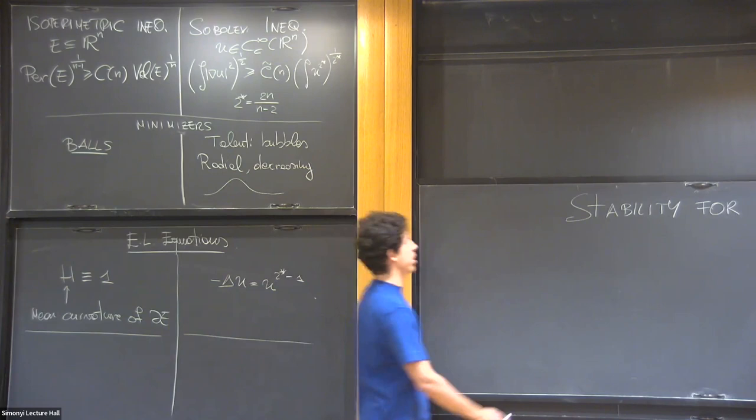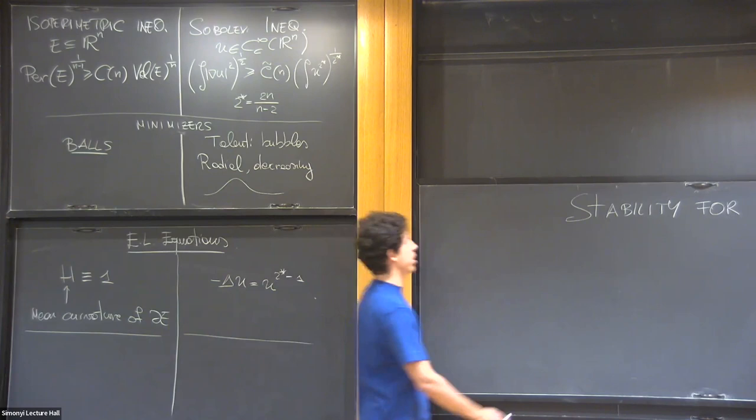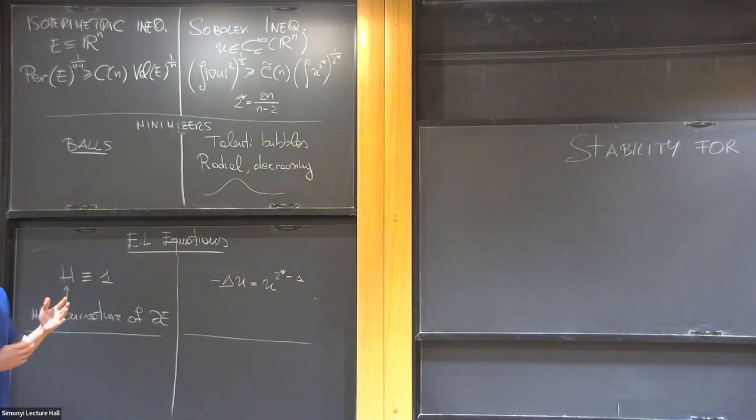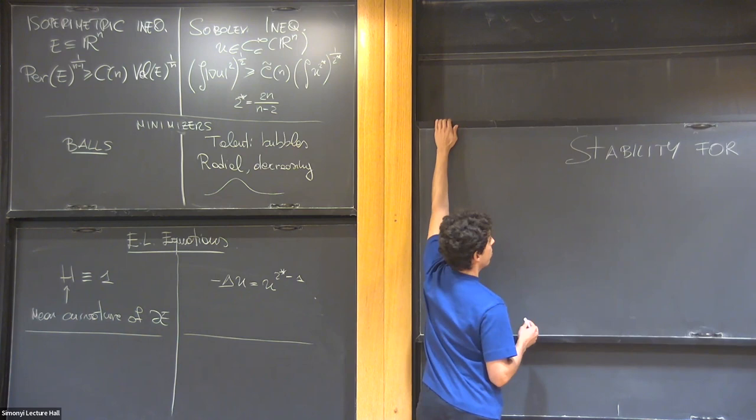Okay, now I can move on and discuss what I mean with stability. Stability is the fact that if you have something which is almost a minimizer for these inequalities, you expect it to be close to a real minimizer. But today, I'd like to discuss something a bit more specific, which is sharp quantitative stability.